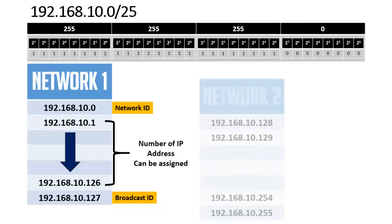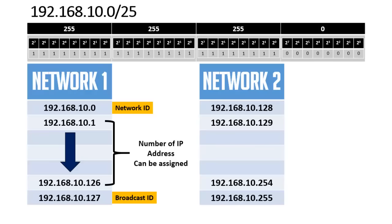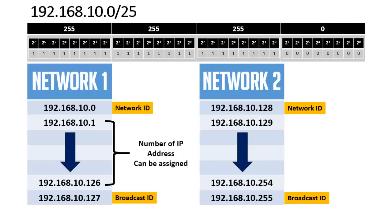In network 2, the IP addresses start from 192.168.10.128 and end at 192.168.10.255. The first address (192.168.10.128) is the network ID and the last (192.168.10.255) is the broadcast ID. The usable host IP addresses run from 192.168.10.129 to 192.168.10.254 — these are the addresses you can assign to devices.